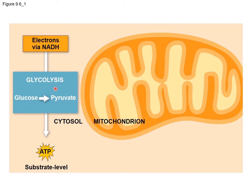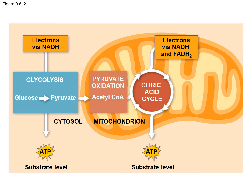Remember, glucose is a six-carbon molecule. During that process, some NADH is made. We have NAD, which is an electron carrier. And then, of course, some ATP is made by substrate-level phosphorylation.